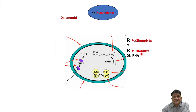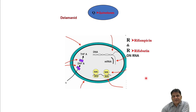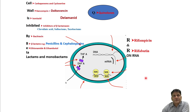The bacterial cell wall, cytoplasm, cytoplasmic membrane — shown in black — the cell wall in green, the DNA synthetic machinery, messenger RNA, and the protein synthetic machinery are all visible here. On the basis of mode of action or site of action, I have classified the antibiotics using a mnemonic I made for easy remembrance.